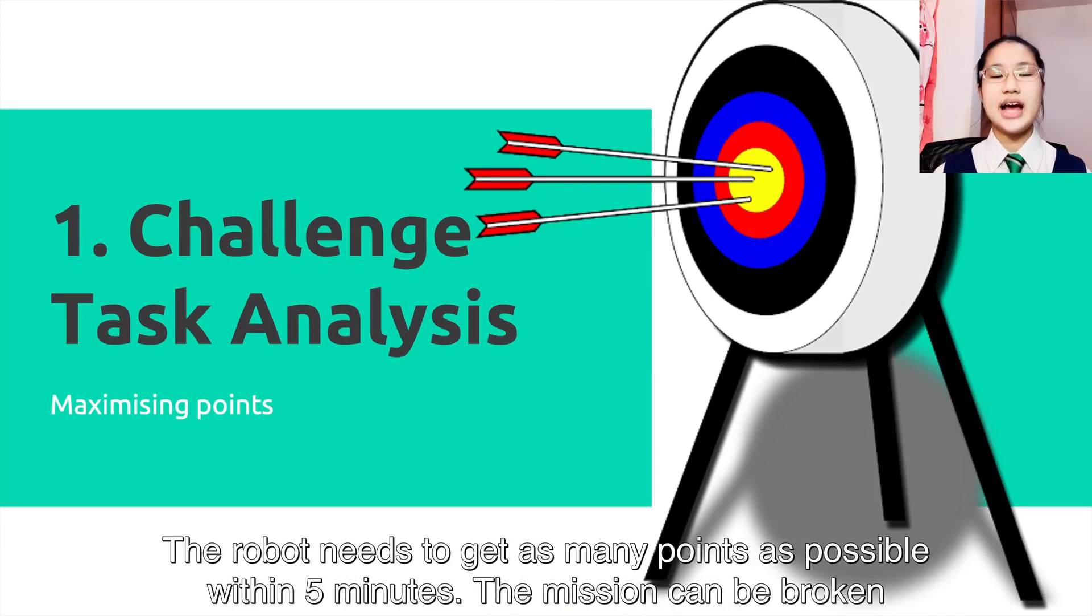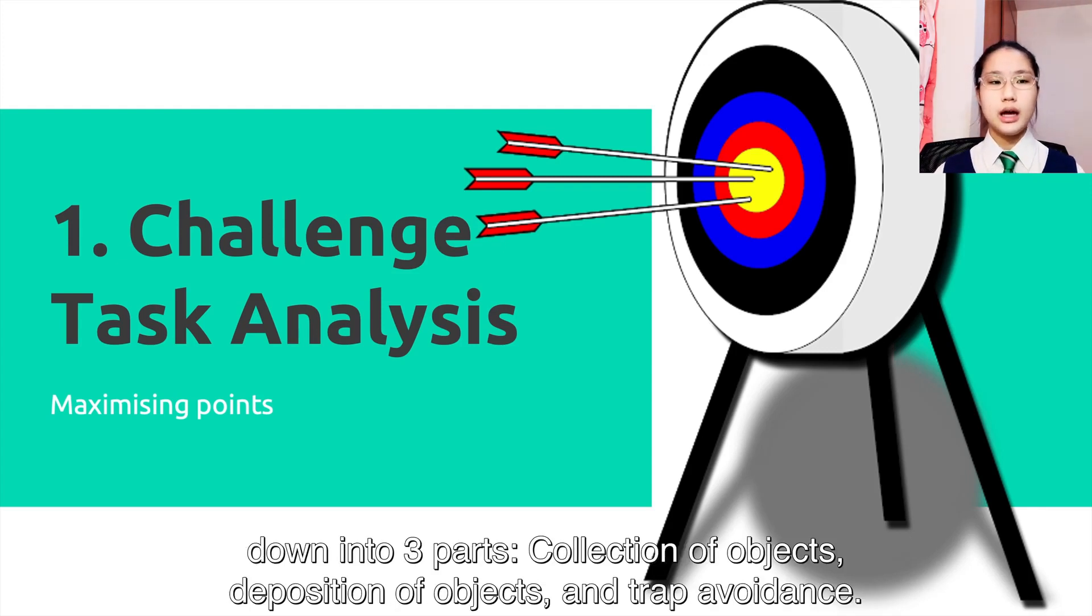Challenge Task Analysis: The robot needs to get as many points as possible within five minutes. The mission can be broken down into three parts: collection of objects, diversity of objects, and trap avoidance.